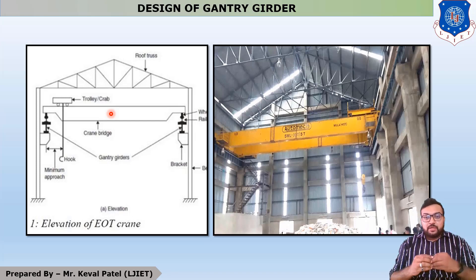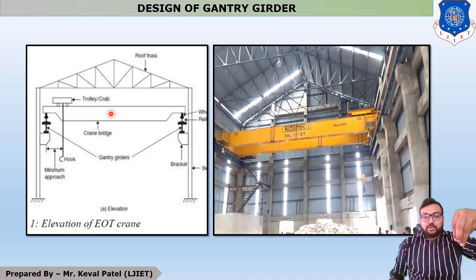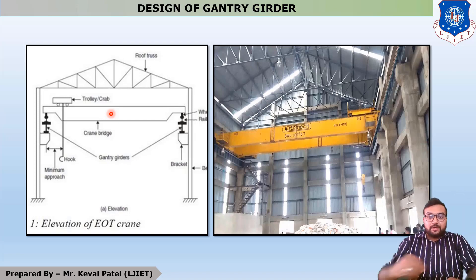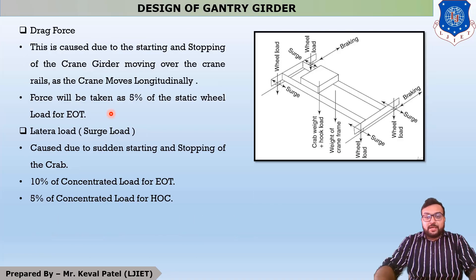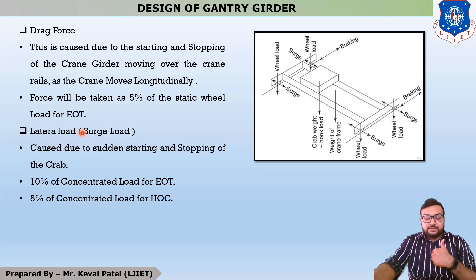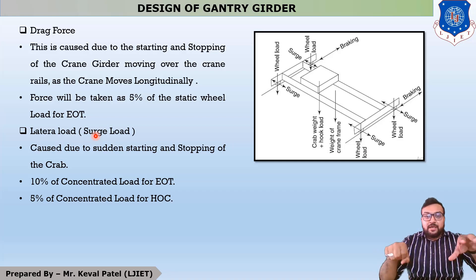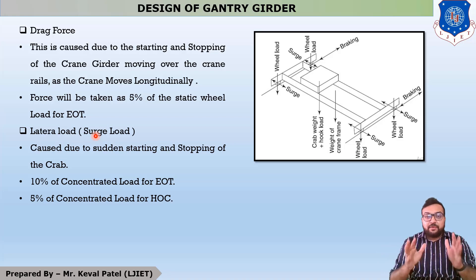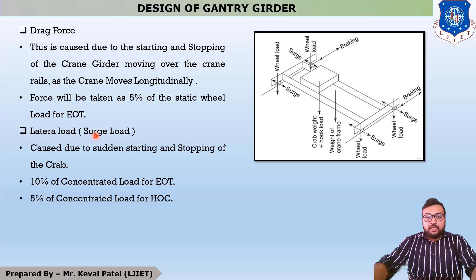Impact load occurs whenever we lift material and put it down — that put-down force is considered the impact load. The third load is drag force, also called breaking force. The last force is lateral load, also called surge load. An example of surge load is when you release a bike clutch and feel a jerk, or when a train starts suddenly and you feel a jerk — that jerk load is your surge load.